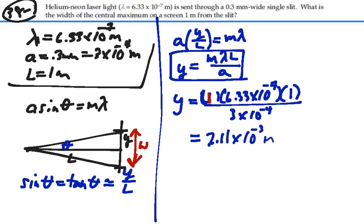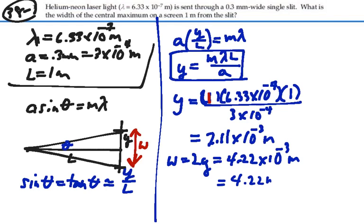That's y, but our width is going to be equal to 2y. That's the width of our central maximum. So that's going to be equal to 4.22 times 10 to the minus 3 meters, or we could say 4.22 millimeters. That is the width of our central bright maximum between the two first order minima, 4.22 millimeters.